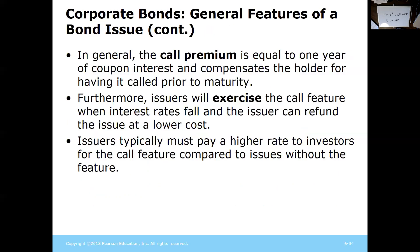Typically there's a premium price on the call price, meaning they repay people more than the original par value. If that premium price becomes lower than the market price, it becomes beneficial to take advantage of the call feature. The call premium is generally equal to one year of coupon interest, basically paying the bondholder for a year's worth of interest. When interest rates fall, the issuer can refund the issue at a lower cost.